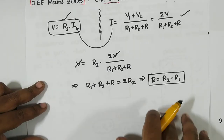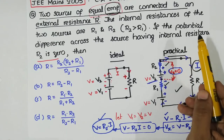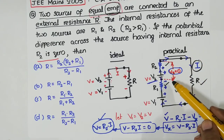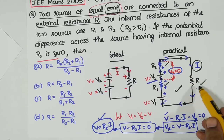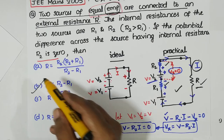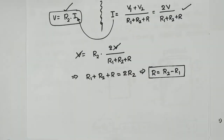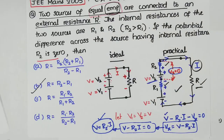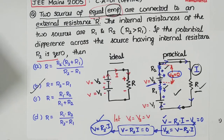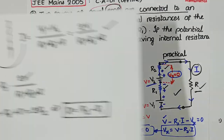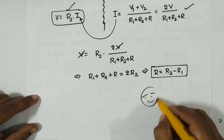It's very simple — no big deal. If the potential difference across the source having internal resistance R2 equals 0, then R = R2 − R1. That's the answer. If you want to take a snapshot, this is page 1 and page 2. That's it for today, thank you.